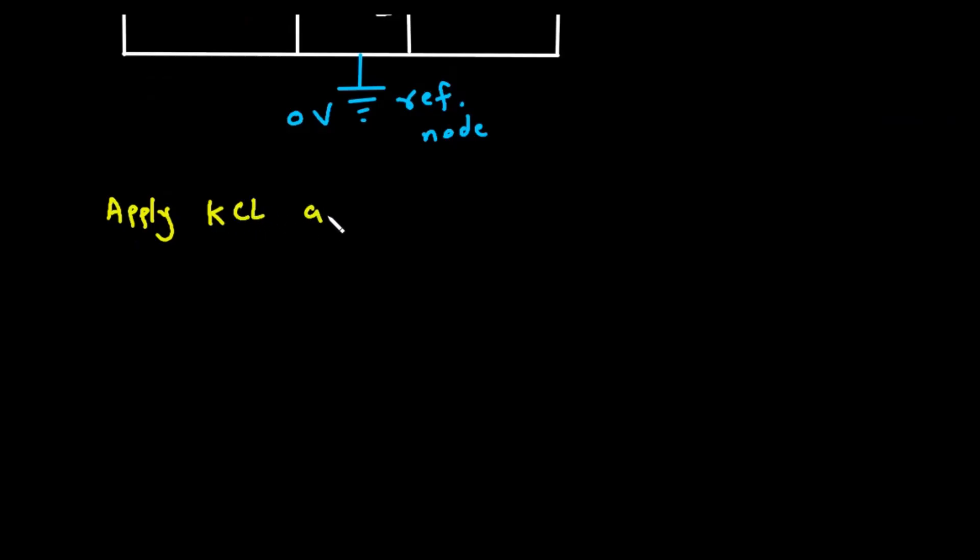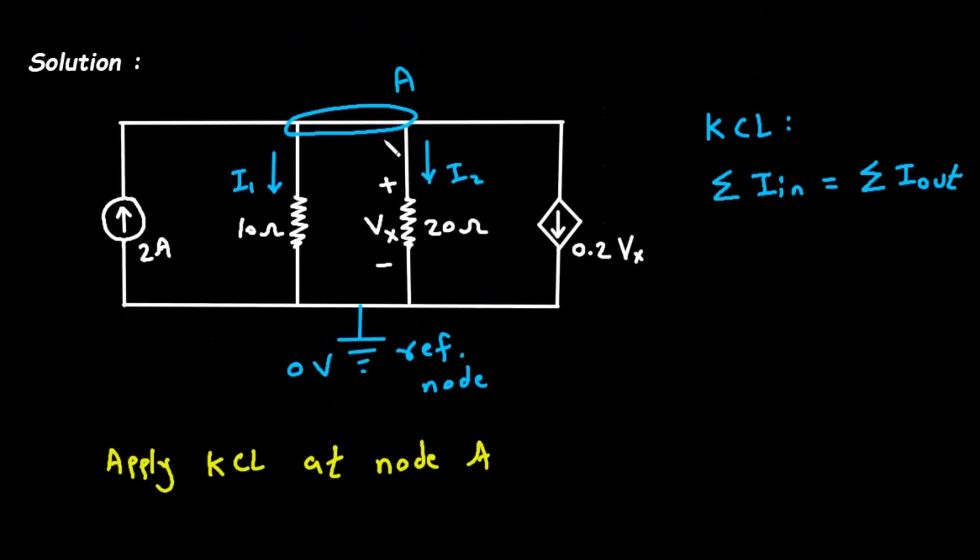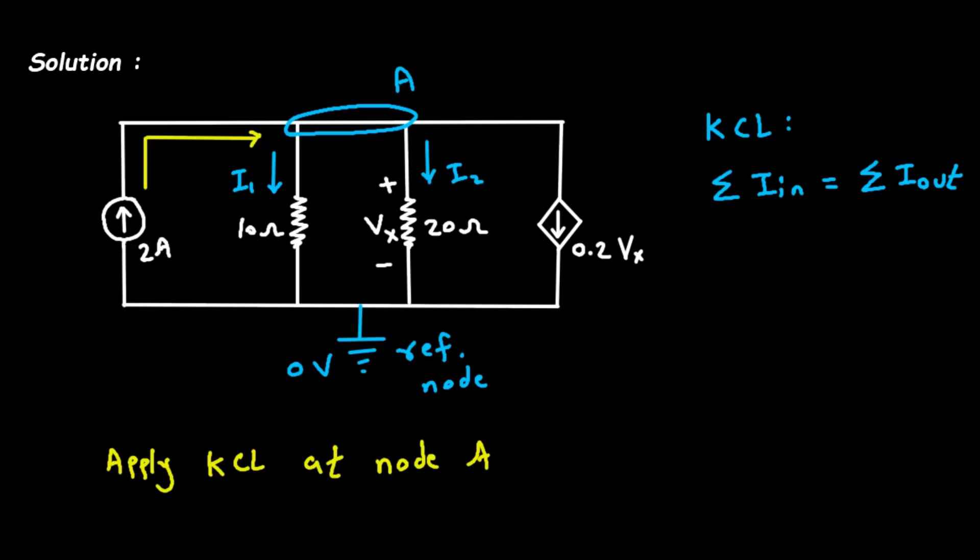Apply KCL at node A. Now here according to KCL, the entering current - the entering current is only two ampere. Here we can see this current is entering in this node and all other currents are leaving.